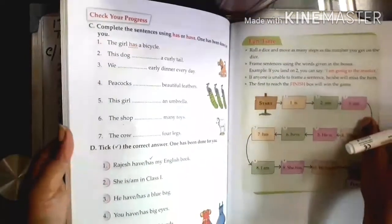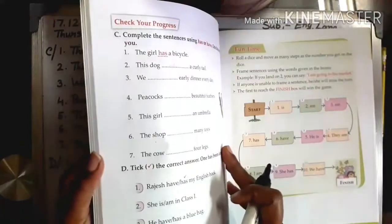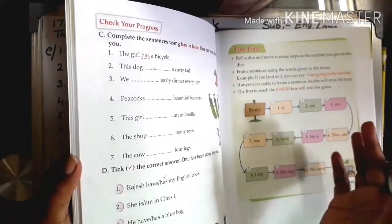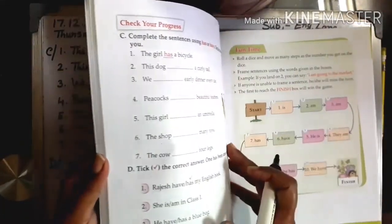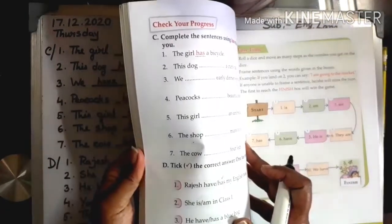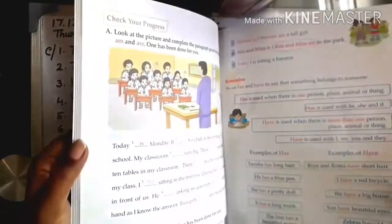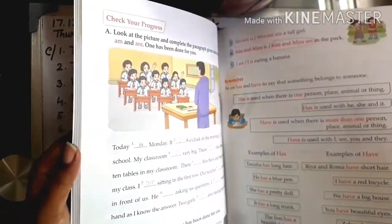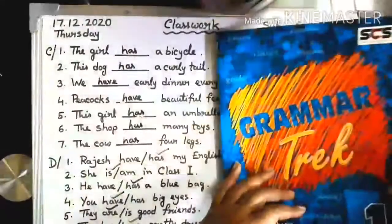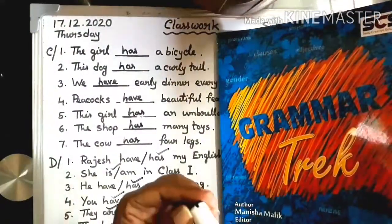I hope you understood. Practice page 62 and page 63 — activities — do it on your own. Fun activities are important. Children, practice pages 61 and 62.